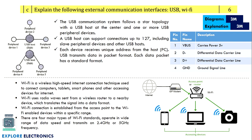Explain the following external communication interfaces: USB and Wi-Fi, for six marks — three marks each. For USB, write the small diagram and purposefully include the pin details of USB to give more information to the evaluator for maximum marks. For Wi-Fi, write the block diagram showing an access point or router connecting to devices, getting information from the modem, connected to the internet, along with the frequency bands used and that it supports up to 127 devices.